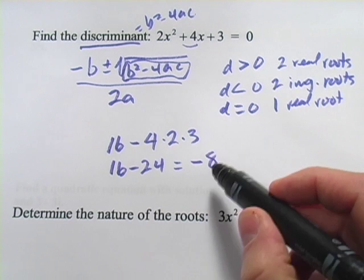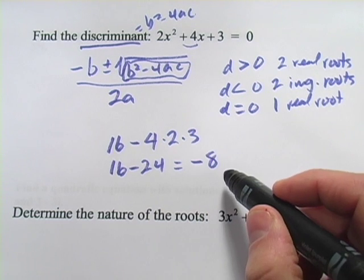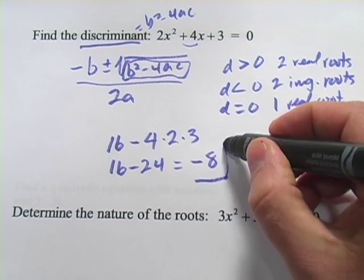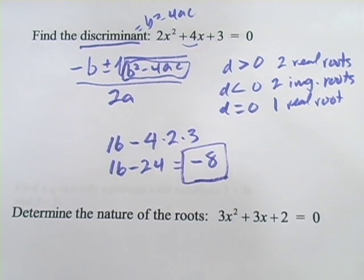What that means is you're going to have two imaginary roots for this particular problem. But in this one, all it said was to find the discriminant. That's what it is, negative 8.